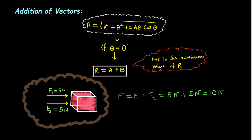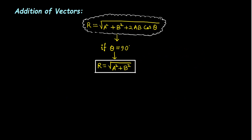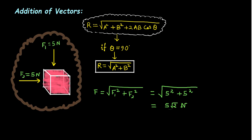Case two: suppose two vectors A and B are acting perpendicular to each other, meaning the angle between them is 90 degrees. The relation becomes R equal to the square root of A squared plus B squared. For example, if this block is being pushed by two perpendicular forces F1 and F2, the resultant force is the square root of F1 squared plus F2 squared. Putting in the values gives 5 root 2 Newton.